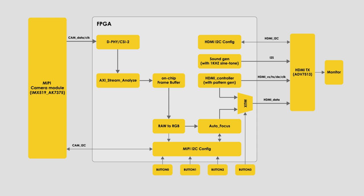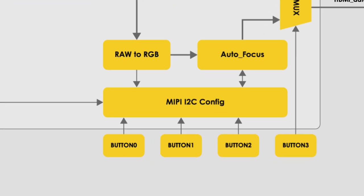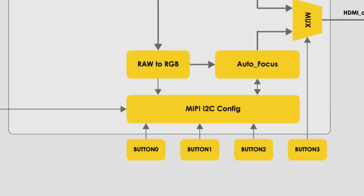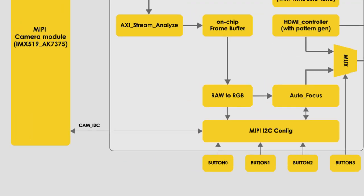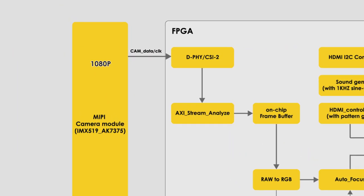Let's use a block diagram to illustrate the operational flow and related controls of the demo code. Firstly, the FPGA code module MIPI I2C config configures the IMX 519 image sensor on the camera module via the I2C interface, instructing it to output 1080p images.